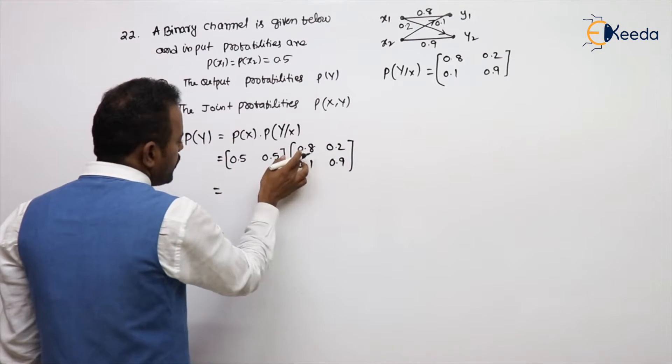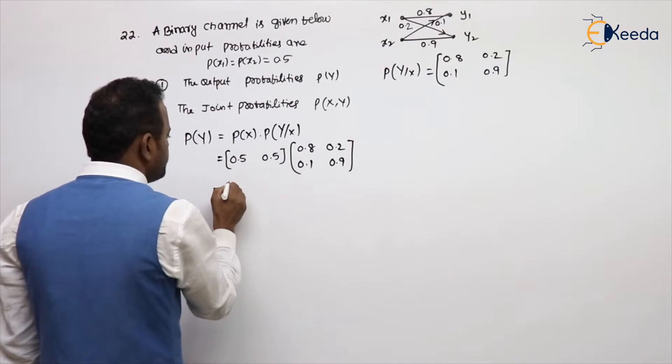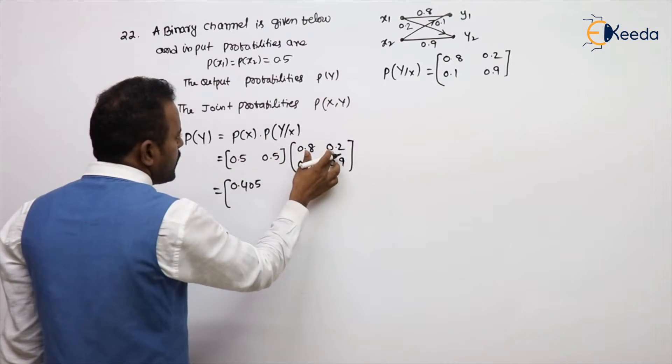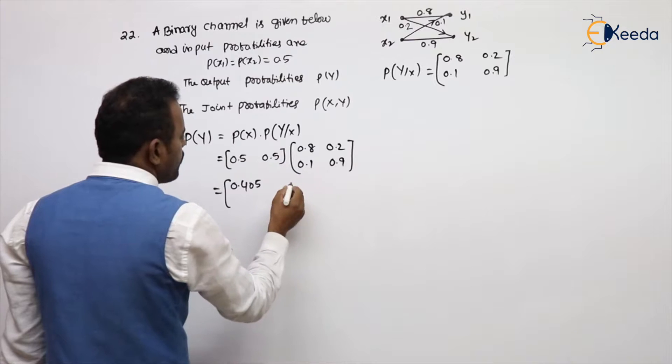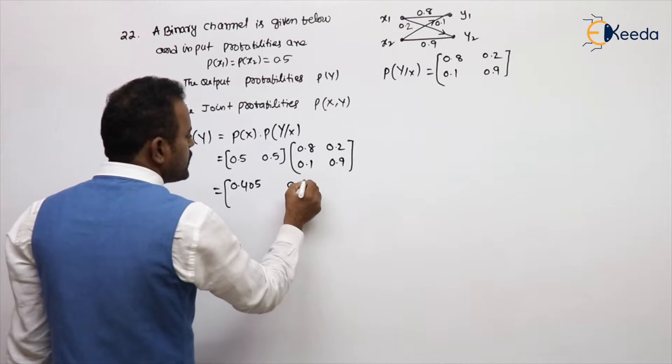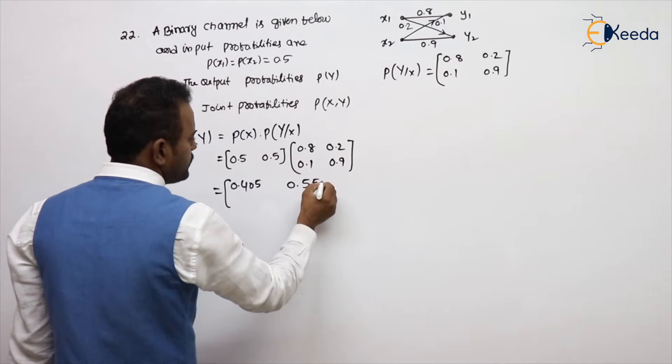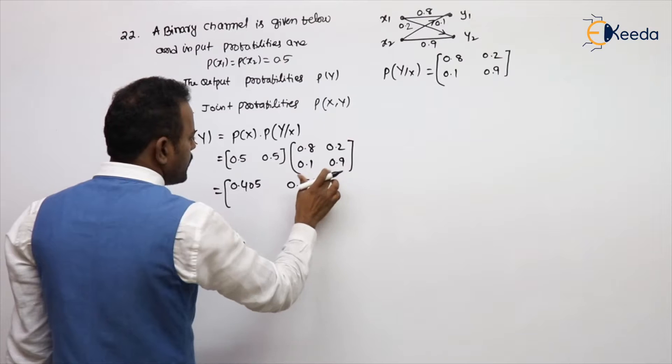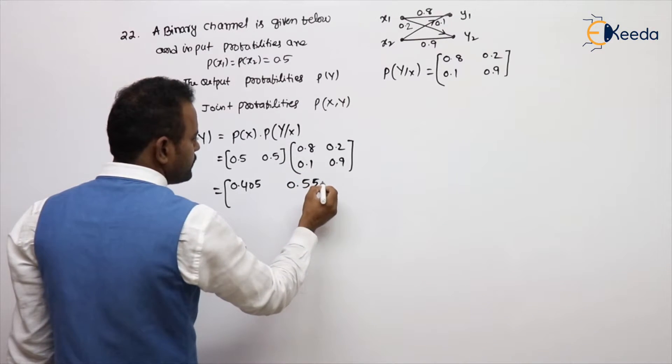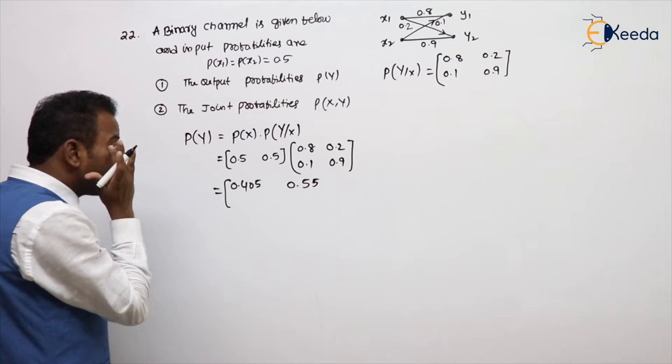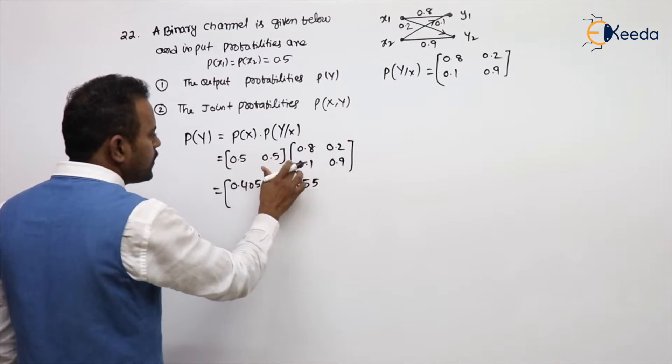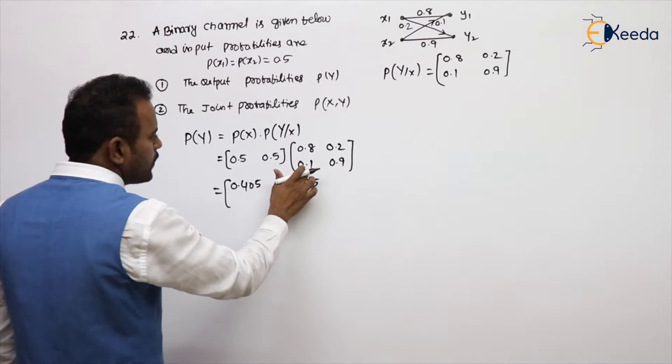This will be 0.40 plus 0.05, so 0.45. Next, 0.10 as well as 0.45, so 0.55. 0.45, 0.55. Next, in the previous 0.40, 0.05 as well.